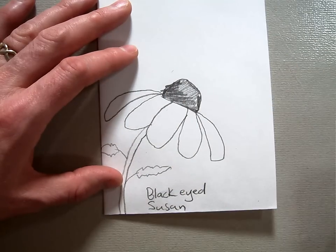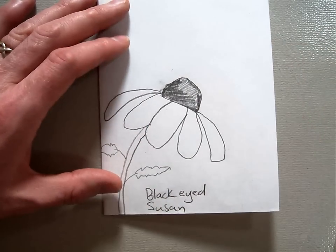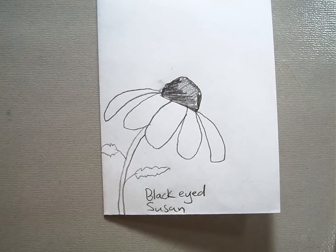If you need to make any mistakes, just grab your eraser and erase it so it's nice and neat. So there's our black-eyed Susan.